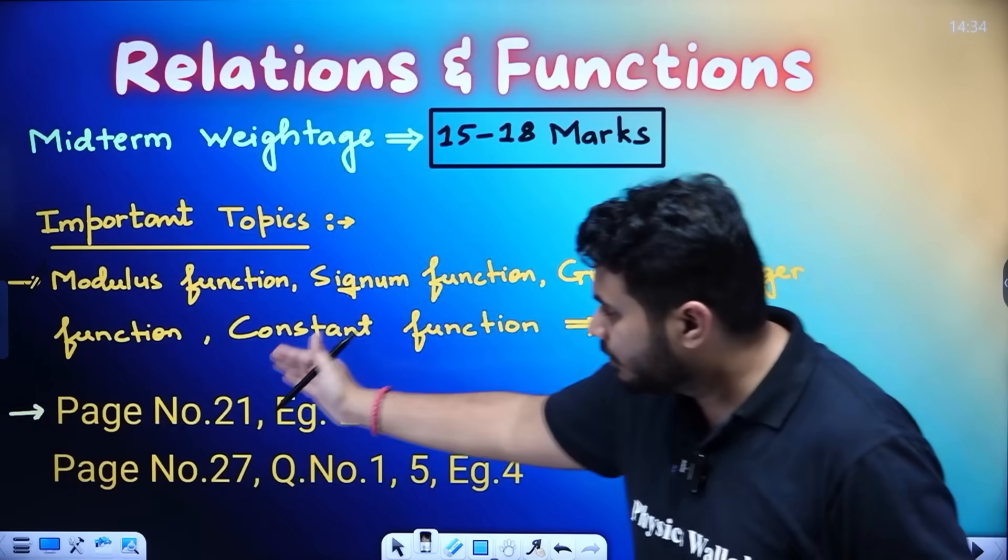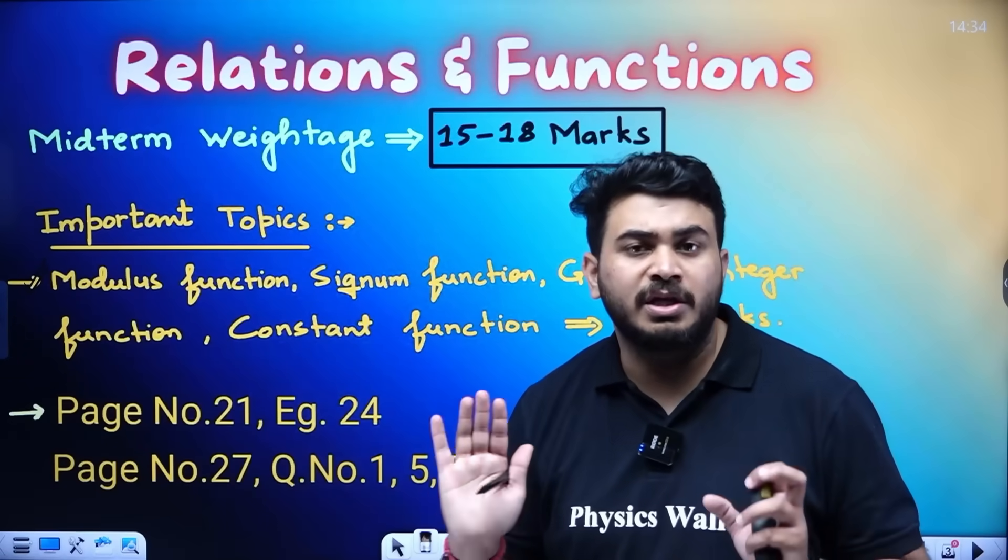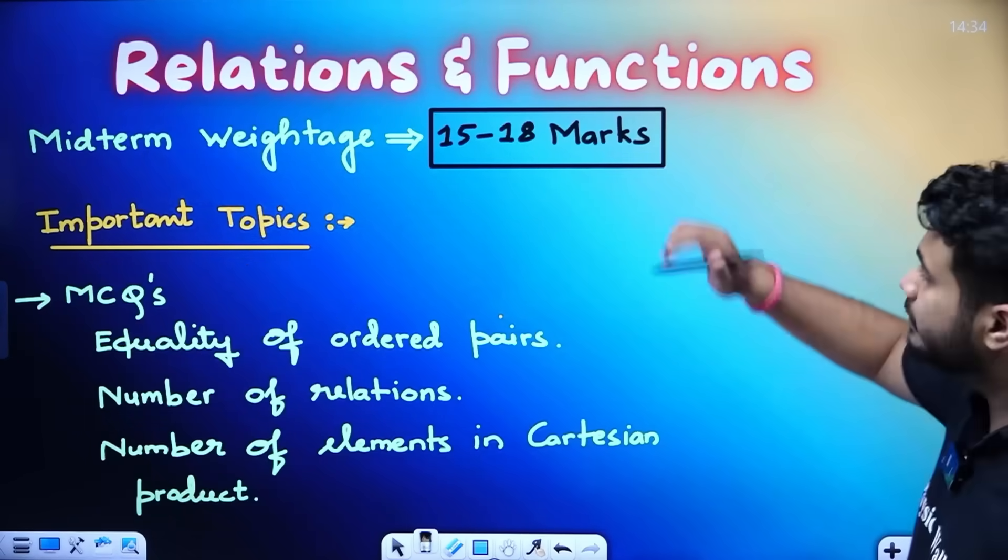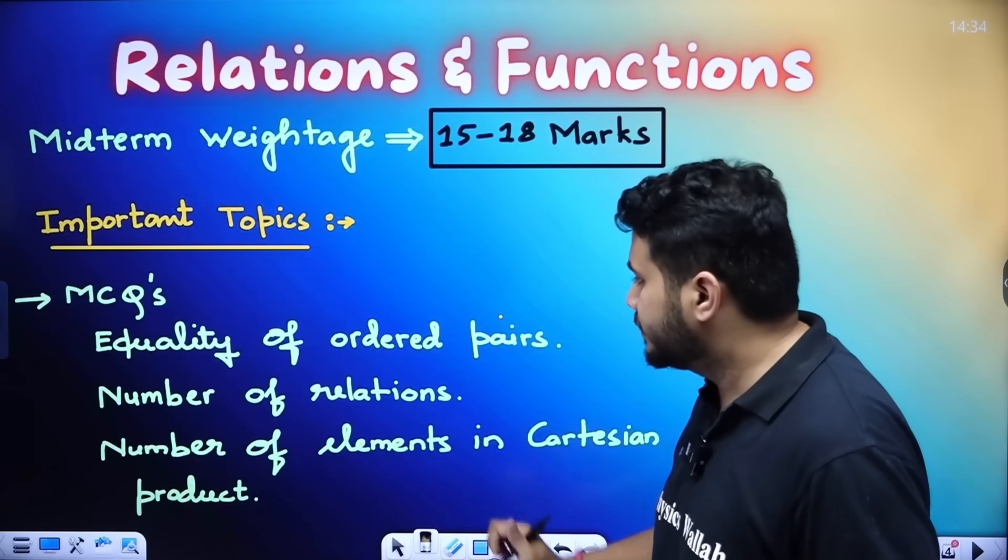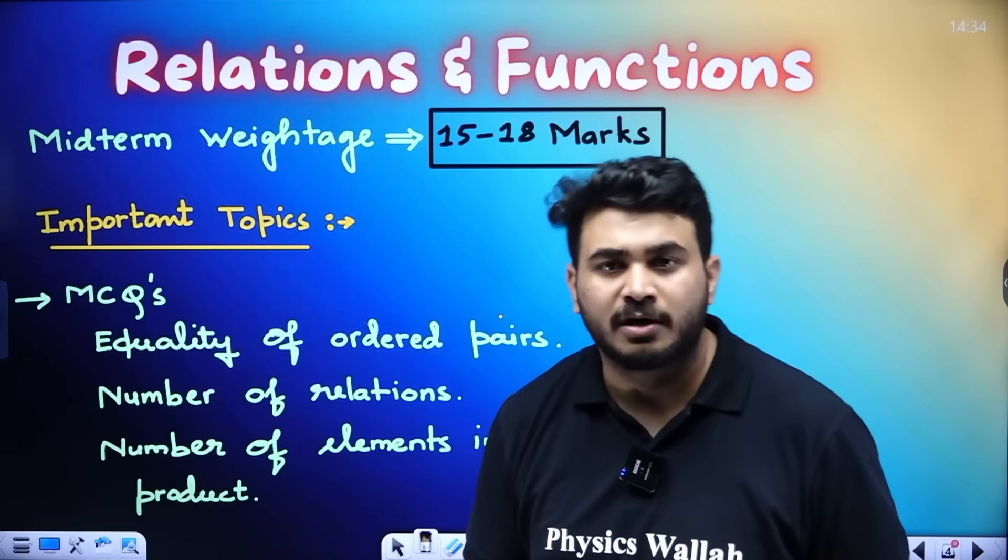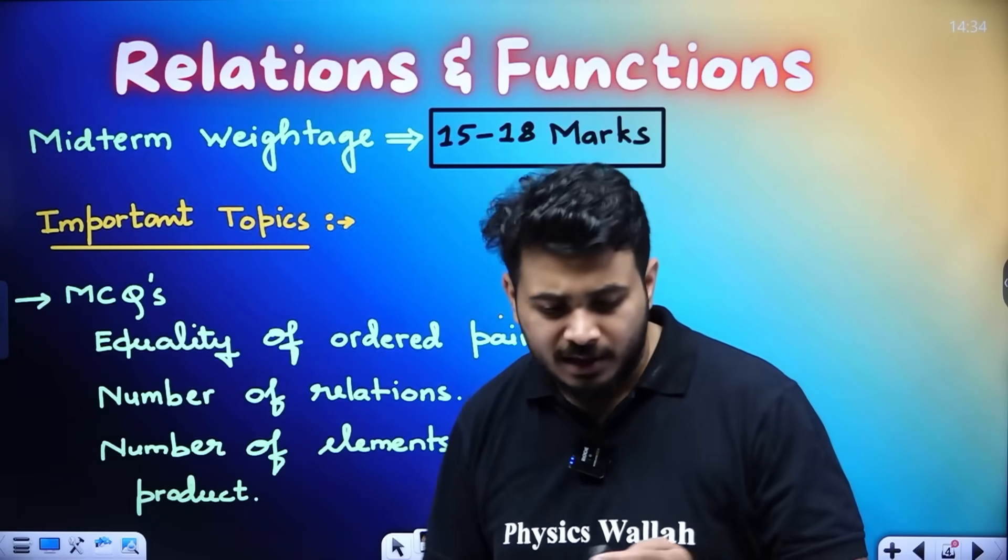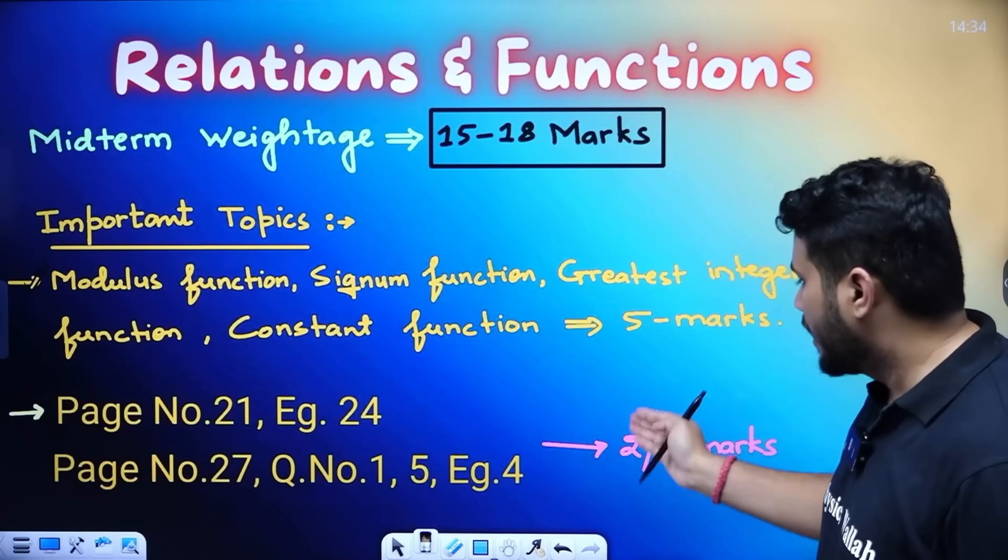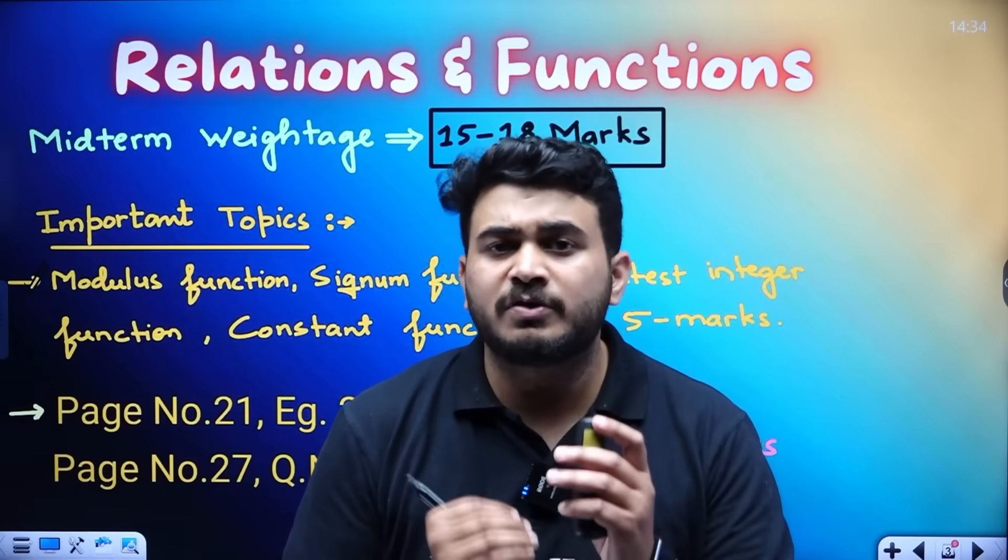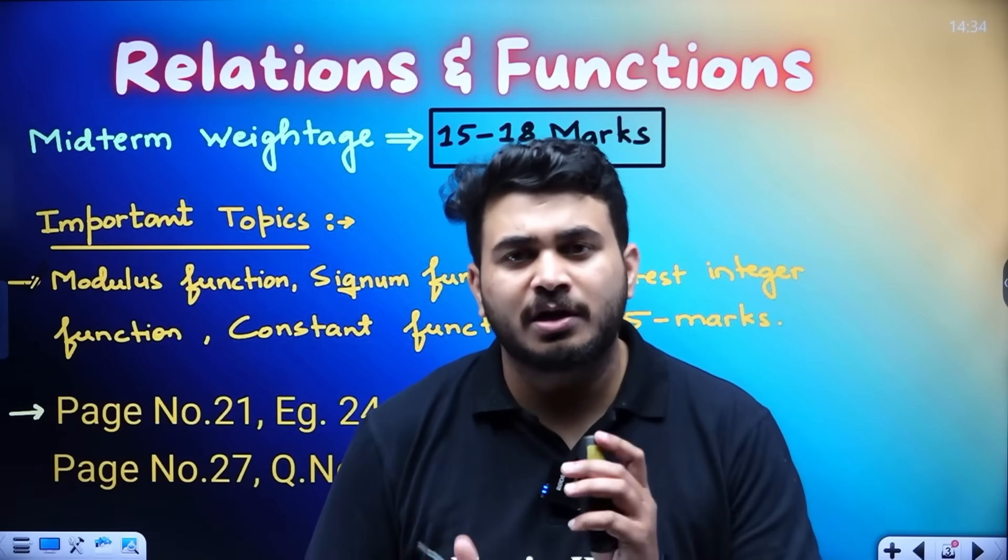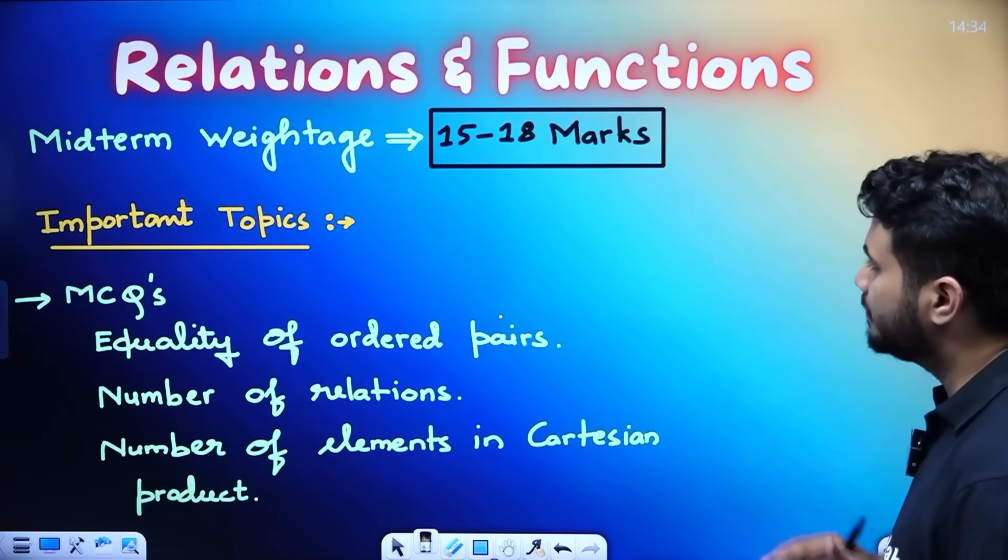And for 2 and 3 marks, I have given important page number 21 only, example 24, page number 27 only, question number 1 and 5 and example 4 over here. These are your important things which you have to study in relations and functions. Along with that students, MCQs, equality of order pairs, number of relations, number of elements in the Cartesian product. These topics are detailed. Definitely 3 MCQs will come. All 3 will be getting covered for you people. This is 10 marks because 2 questions will come from here and here 2 and 3 marks. This is a bit difficult. But what I am telling is, whatever the questions will come will be of the same pattern.